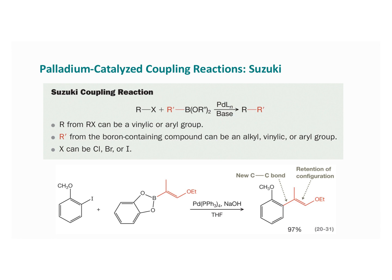The organocuprate coupling reactions we've looked at are not the only type of coupling reactions used in organic synthesis. There are many others developed using a range of metal atoms. We're going to look at two other coupling reactions that both involve palladium: the Suzuki reaction and the Heck reaction.